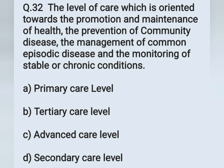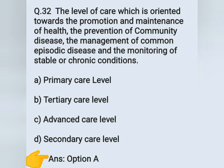Question number 32. The level of care which is oriented towards the promotion and maintenance of health, the prevention of community disease, the management of common episodic disease, and the monitoring of stable or chronic conditions — Option A: Primary care level. Option B: Tertiary care level. Option C: Advanced care level. Option D: Secondary care level. The correct answer is Option A — primary care level.